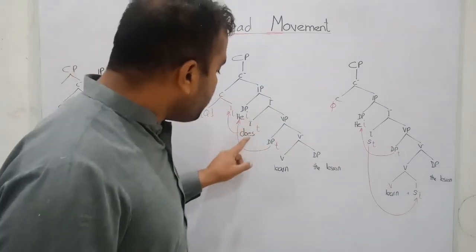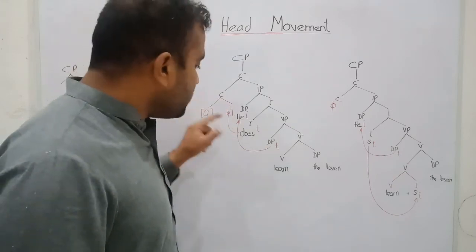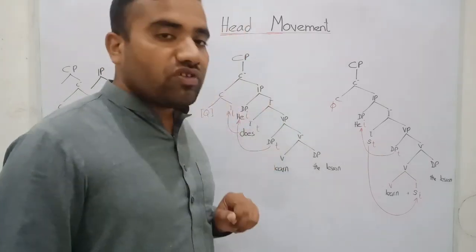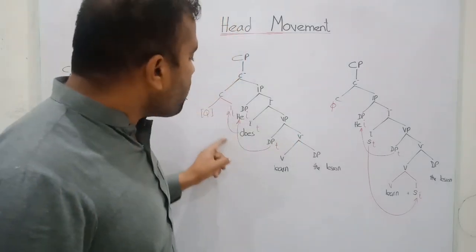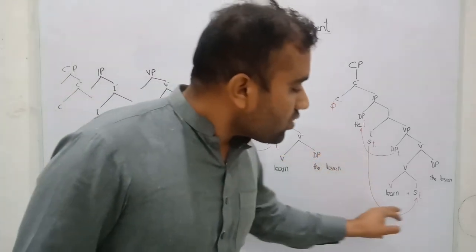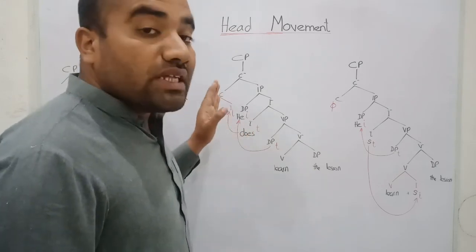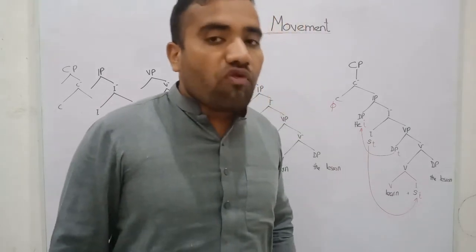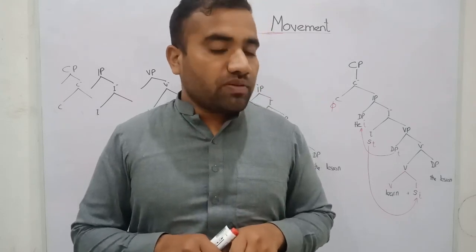Because Q is a strong feature, it takes the lower head to its head position. In this way, C marks this sentence as interrogative. This movement is called overt movement — whereas in the simple declarative sentence, the movement is covert movement. If we want to construct an interrogative sentence, the movement is overt; if we want to construct a simple sentence, the movement is covert. Please subscribe the channel and press the bell icon for more updates about language and linguistics. Thank you.